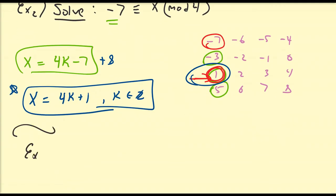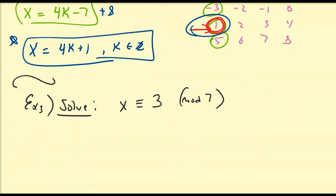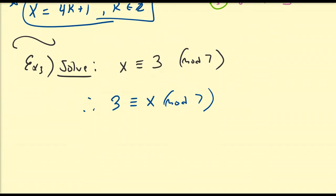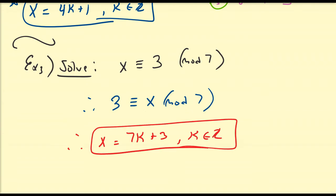Example 3: solve the congruence equation x is congruent to 3 modulo 7. It's important to notice that if x is congruent to 3, then 3 must be congruent to x modulo 7 as well. So we can proceed with the same structure as the previous examples. That means x must be equal to 7k plus 3, where k is an arbitrary integer — that is the general solution to this congruence equation.